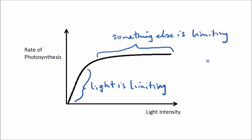So what is that something else? It could be one of the other factors: carbon dioxide concentration or temperature. They might be the thing that is holding back the rate of reaction — it may be that there isn't enough carbon dioxide, or it may be that the temperature isn't right. Something else is holding it back here, not the light intensity.